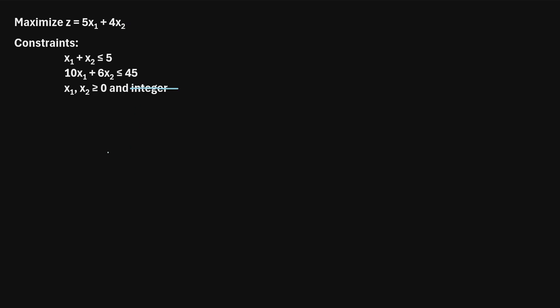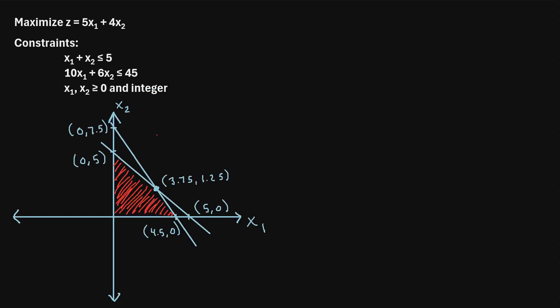One way to solve this is by using a graphical method. When we use a graphical approach, we graph these two constraints and come up with a feasible region — that's this red region right here. Any point in this region satisfies all of the constraints, and the point within the feasible region that maximizes the function is the point 3.75, 1.25.